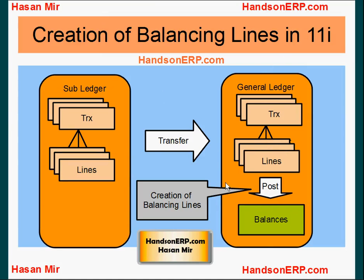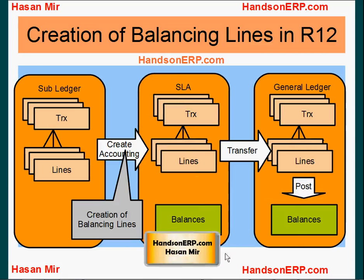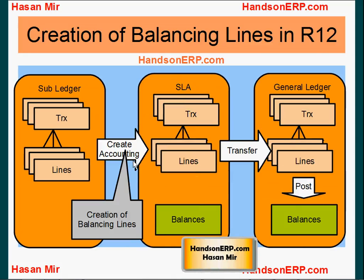Now in Release 12, this has changed. When you create accounting — either by running the create accounting program or by using the online create accounting option — balancing lines are created in the journal within the subledger accounting module. So the subledger accounting module will have a complete picture; it will not have a journal that is missing balancing lines. It will have a complete journal, and hence this is a true accounting representation of subledgers.